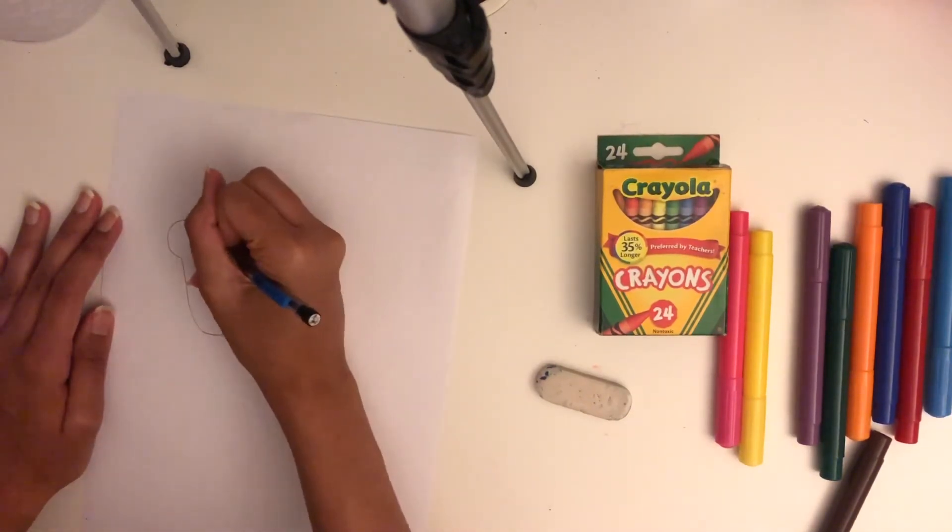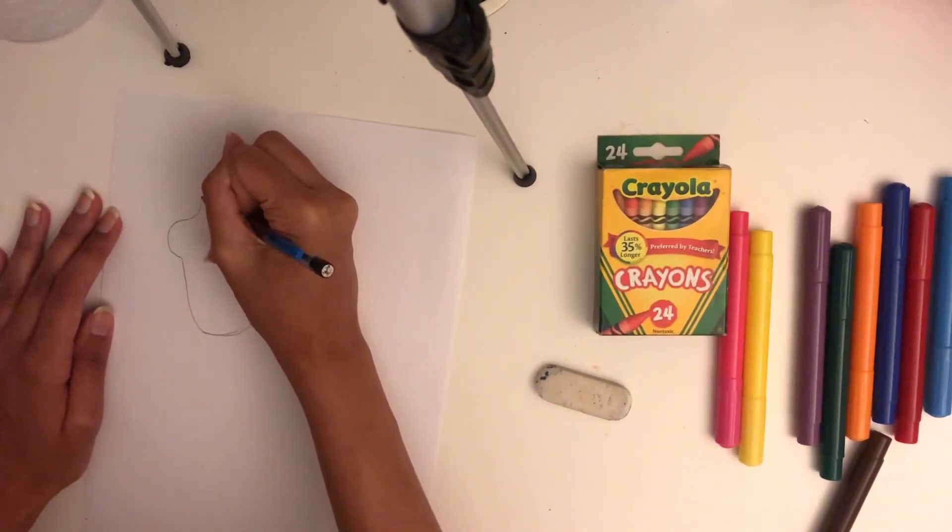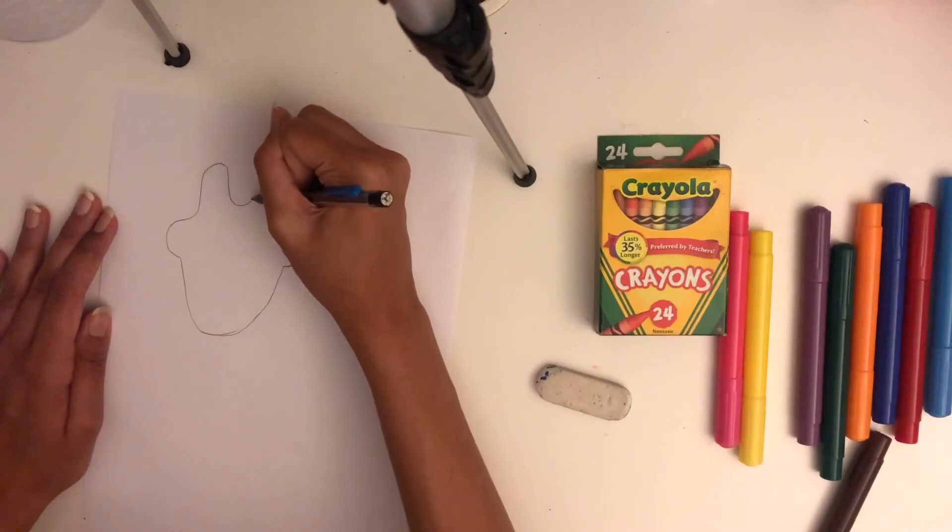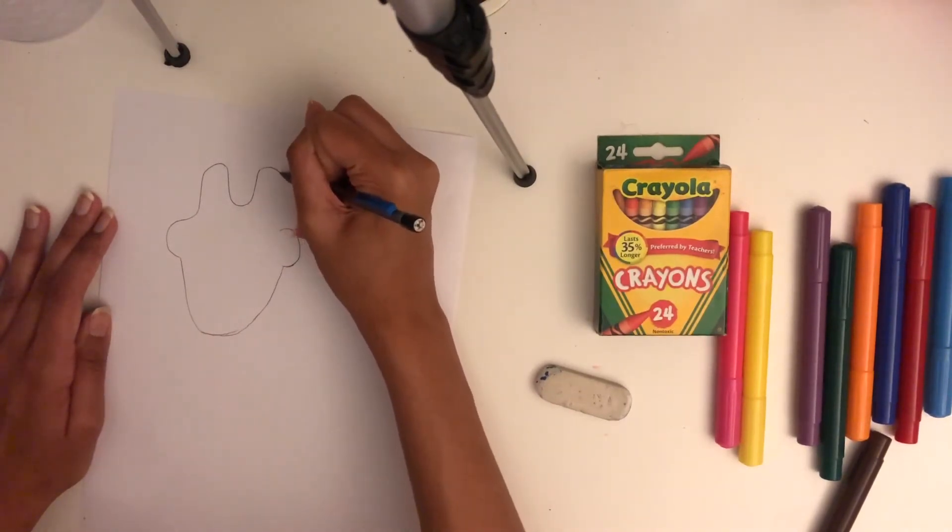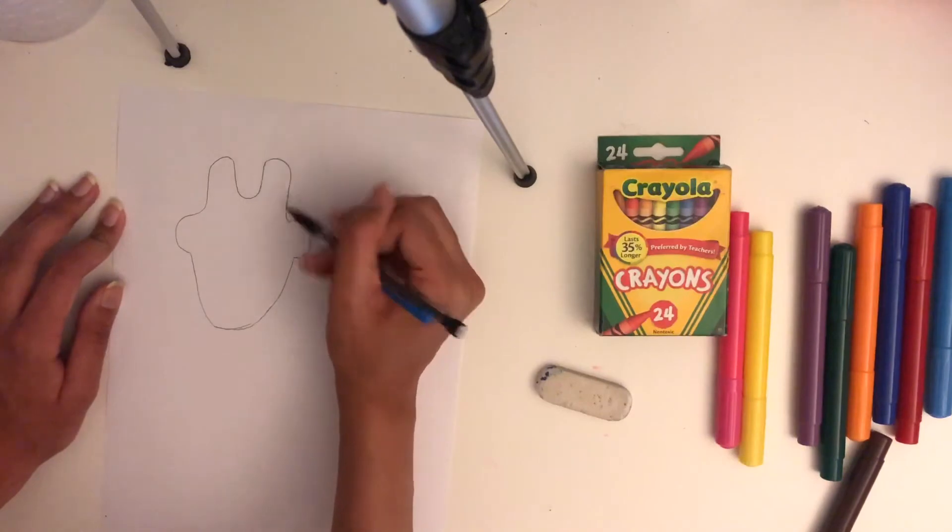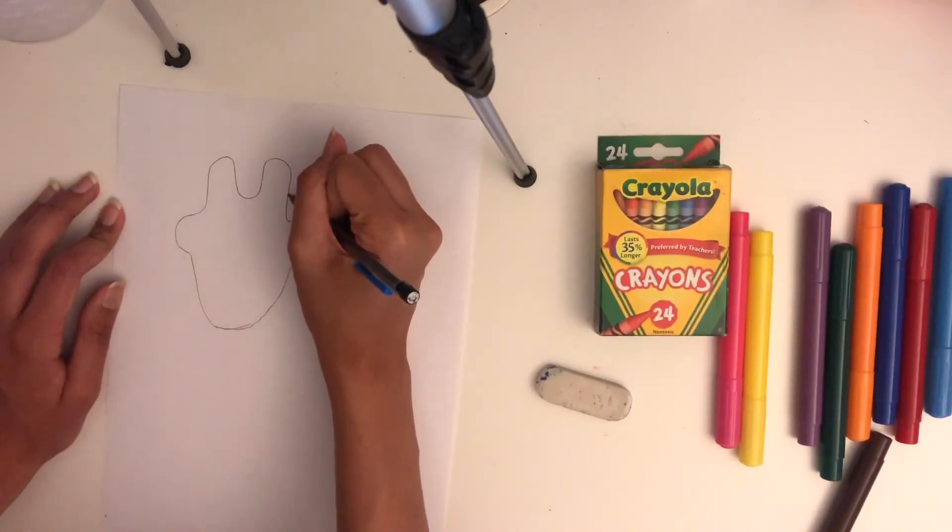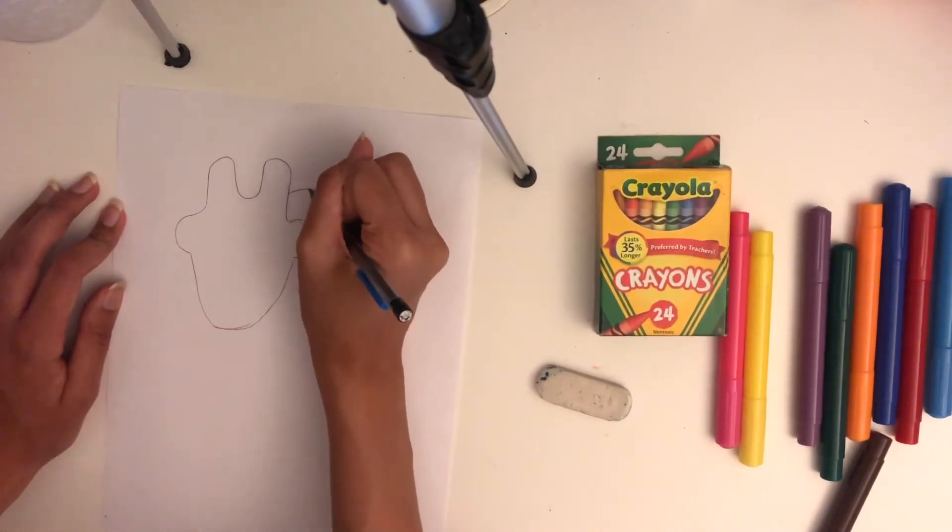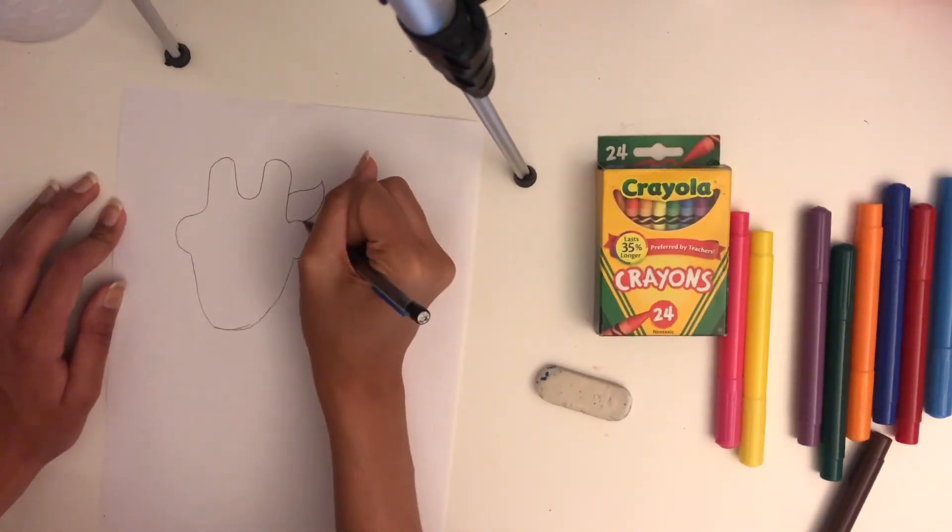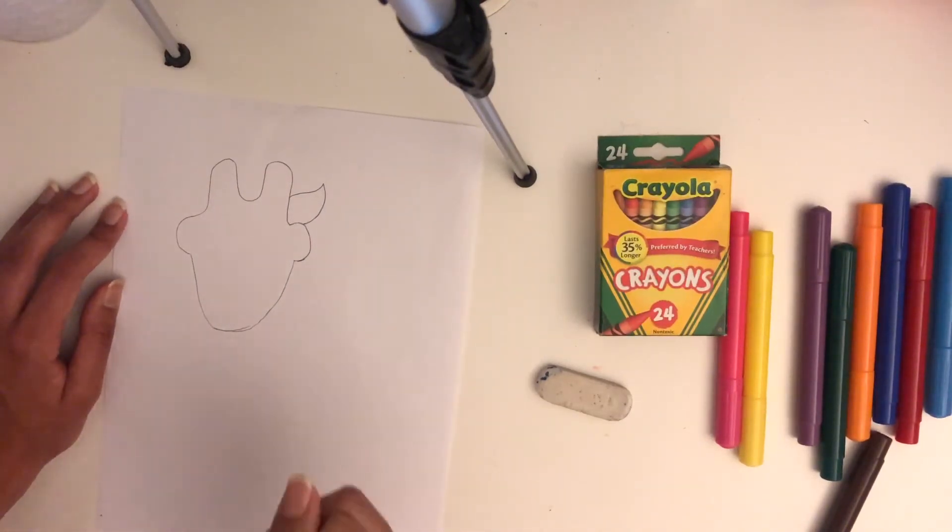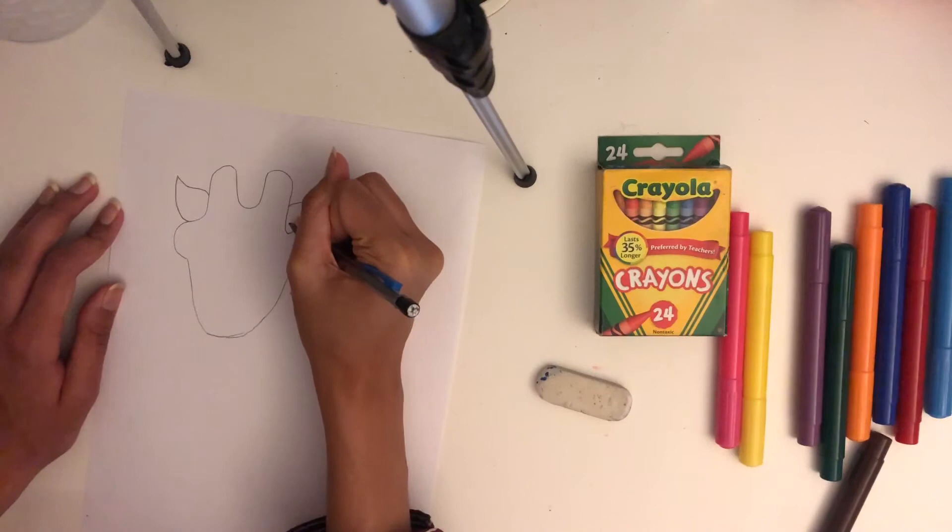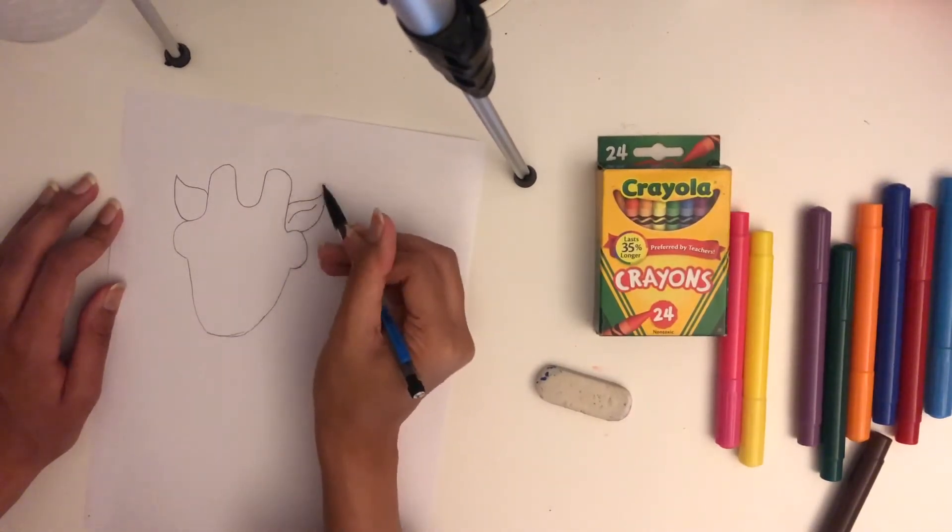So next thing I'm going to do is continue this line up, curving it a little bit. And I'm going to make the horns that are at the top of the giraffe's head. So in these spaces between the half circles and the horns we just created, I'm going to add some ears. Starting about here, I'm going to curve up like that. And then I'm going to curve this line back down to right about there. I'm going to do the same thing on the other side.